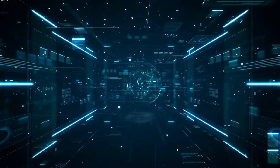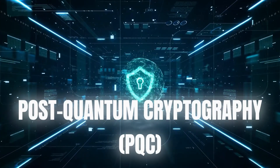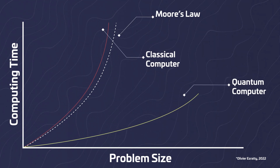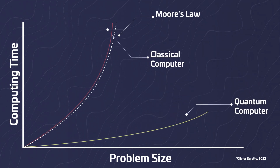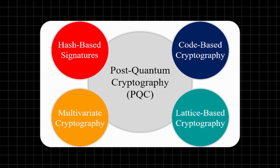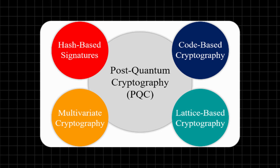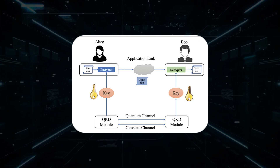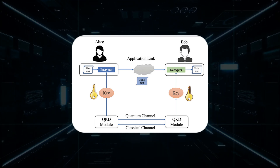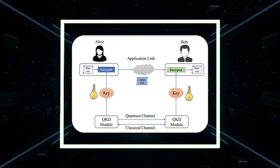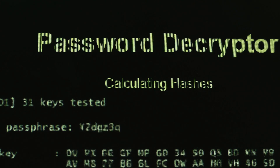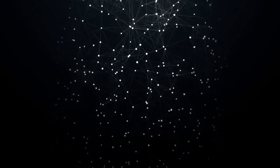In response to these vulnerabilities, researchers are developing post-quantum cryptography, or PQC, algorithms that can withstand quantum attacks. These algorithms are based on mathematical problems believed to be hard for both classical and quantum computers. Techniques include lattice-based cryptography, hash-based cryptography, code-based cryptography, and more. Quantum key distribution, or QKD, leverages quantum mechanics principles to create secure communication channels, allowing two parties to generate a shared and secret random key for encryption. QKD is theoretically immune to quantum attacks, though practical implementation still faces challenges.